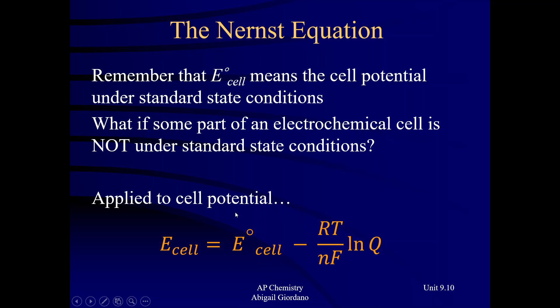The E cell with the degree symbol is the cell potential when the cell is running under standard state conditions. The other E cell — without the degree symbol — is the new voltage we get when some part of our conditions are not under standard state.